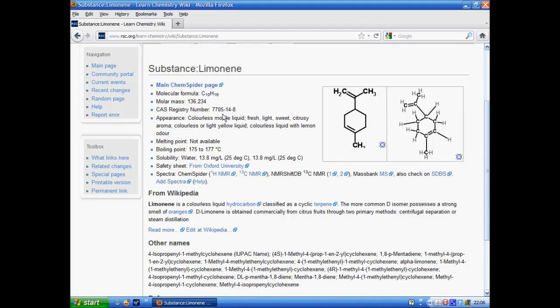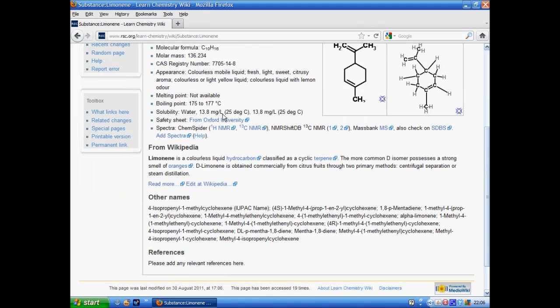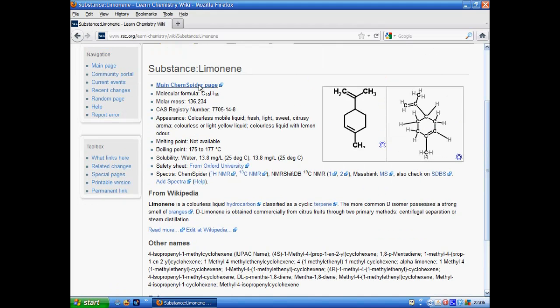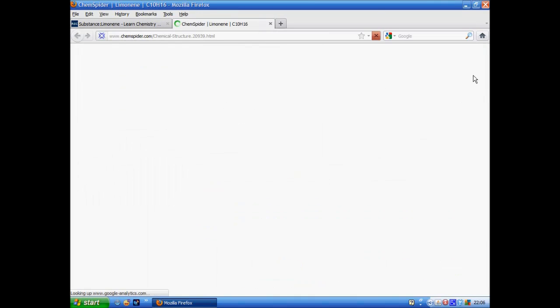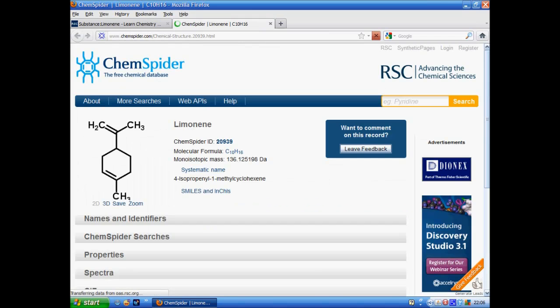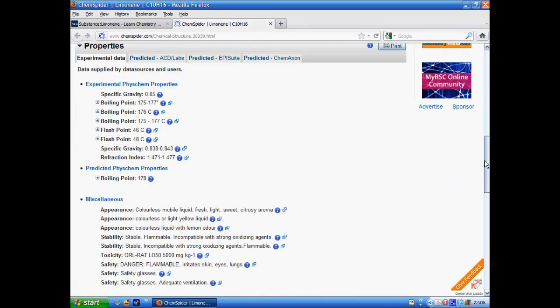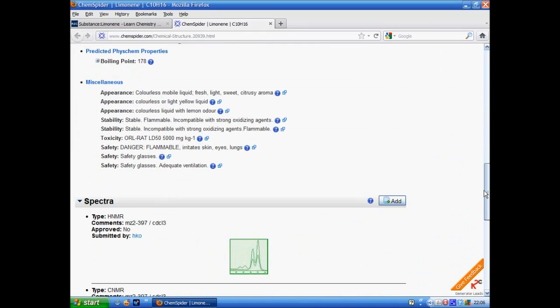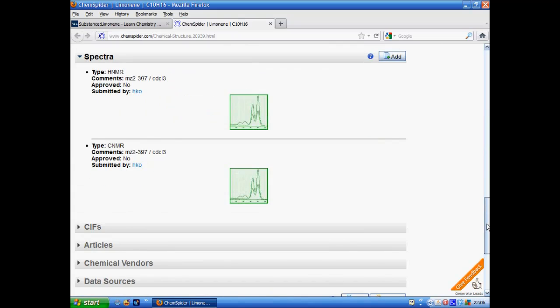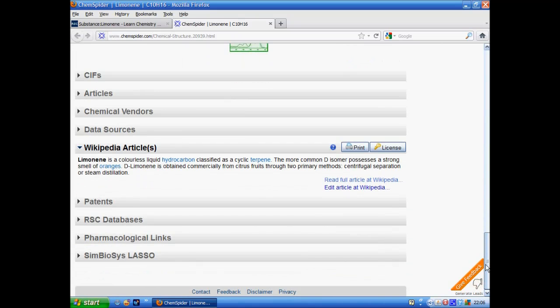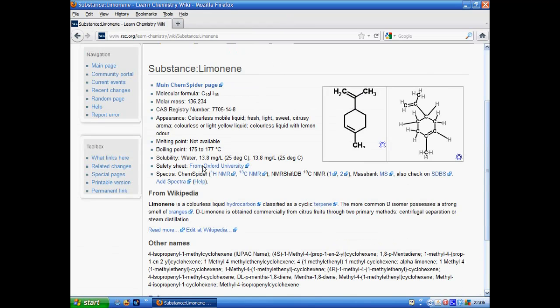Basically this is a distillation of what's in the corresponding ChemSpider page for this compound. If we click on the ChemSpider link you can see the original information with images, names, properties, spectra and Wikipedia information. But we also have a lot of extra information so it might be confusing for a student. The idea is that these substance pages in the Wiki just show a condensed version.